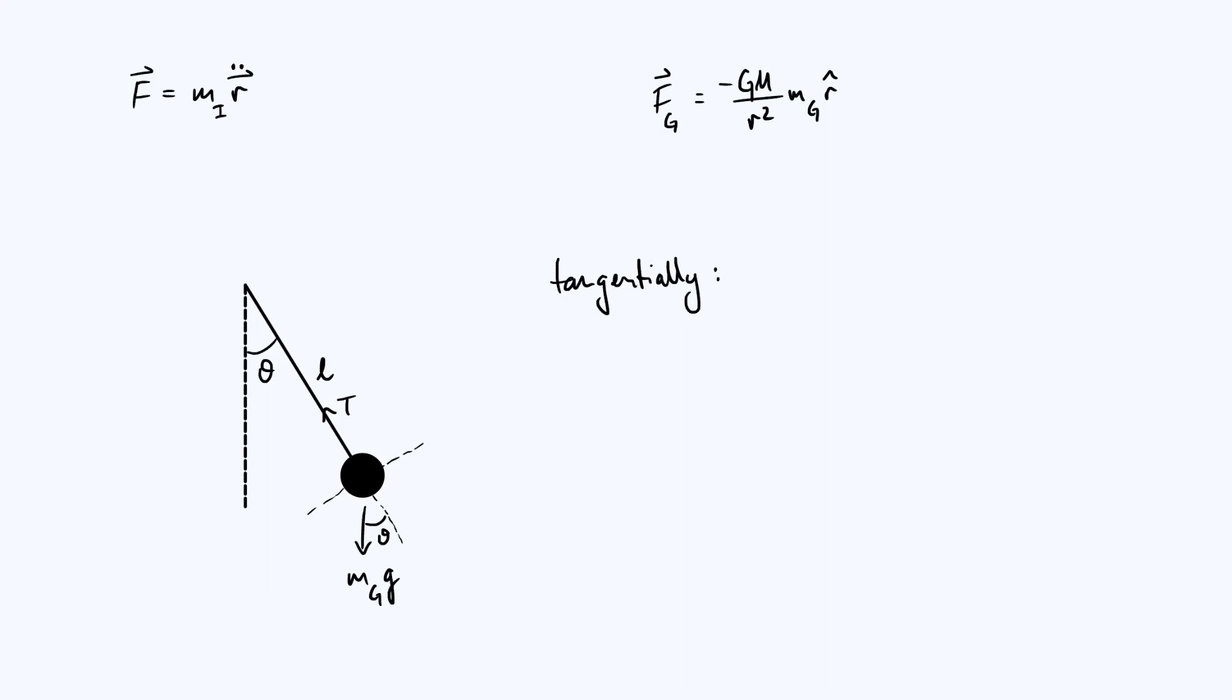If we resolve our forces tangentially, the tension doesn't have any tangential component, it's purely radial. So the horizontal force in the tangential direction is purely coming from the tangential component of the weight. The component of the weight from trigonometry is gravitational mass times g, times sine theta, and we give it a minus sign because it's tending to pull the pendulum bob back towards the center.